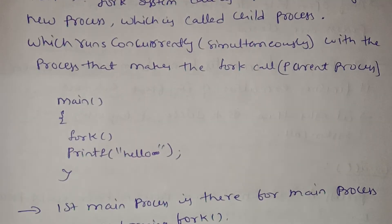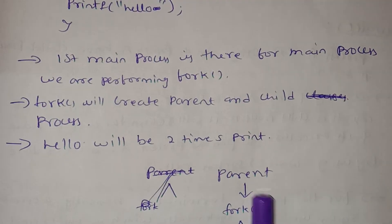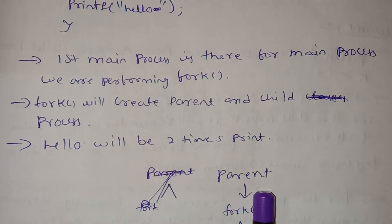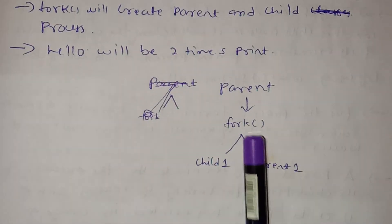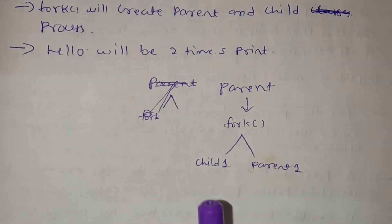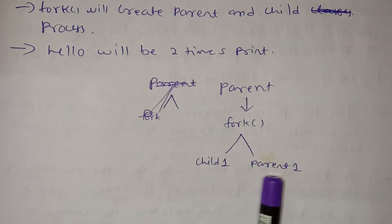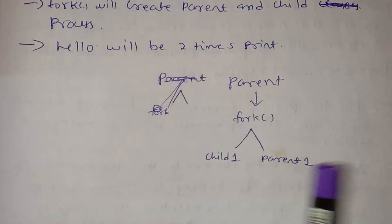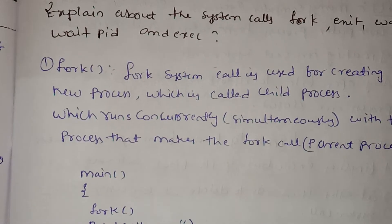We need to print two times to say hello. First, the parent is the main parent process, then the fork system call is called. A child process is created, and in this way we get two print outputs.